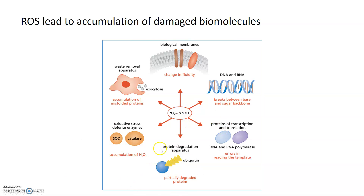ROS can also affect the ubiquitin-proteasome system. Without this protein degradation mechanism, proteins don't get degraded — particularly when they're damaged — which could lead to further damage and toxicity. Additionally, the waste removal apparatus of the cell can be affected by ROS, which can lead to the accumulation of misfolded or damaged proteins.